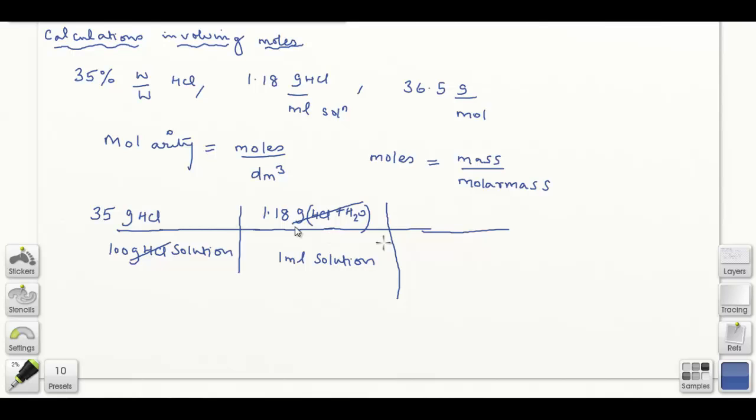Now let's convert the mass to moles. To get rid of the grams, I use the molar mass. So 36.5 grams equals 1 mole. Now the grams of HCl cancel out, giving me moles in the numerator and milliliters in the denominator.